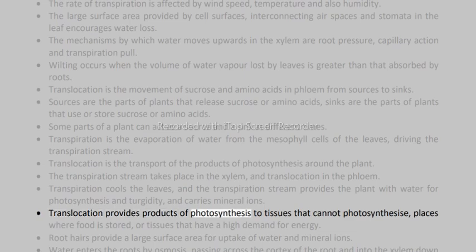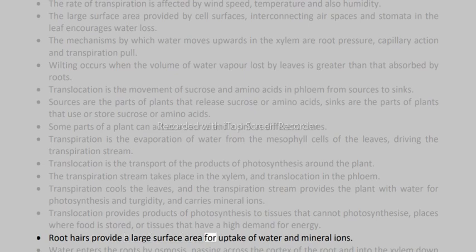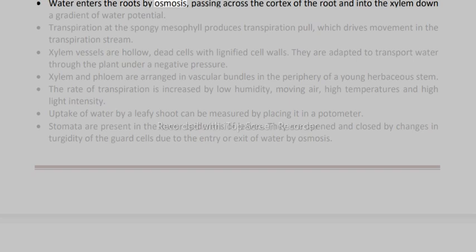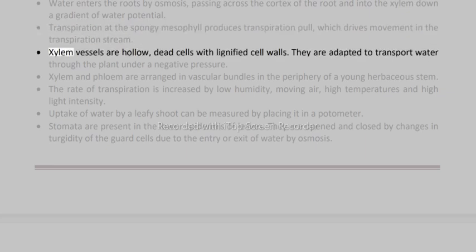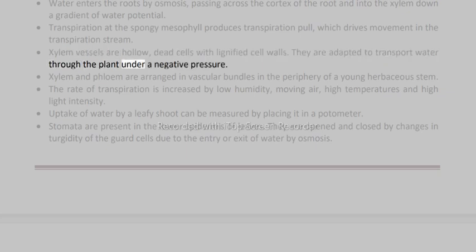Translocation provides products of photosynthesis to tissues that cannot photosynthesize, places where food is stored, or tissues that have a high demand for energy. Root hairs provide a large surface area for uptake of water and mineral ions. Water enters the roots by osmosis, passing across the cortex of the root and into the xylem down a gradient of water potential. Transpiration at the spongy mesophyll produces transpiration pull, which drives movement in the transpiration stream. Xylem vessels are hollow, dead cells with lignified cell walls, adapted to transport water through the plant under a negative pressure.